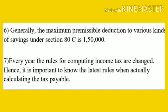Moving to the next point: generally the maximum permissible deduction for various kinds of savings under Section 80C is rupees 1,50,000. It means up to 1,50,000 there is no need to pay any tax on this amount. If your savings are more than that, you have to pay tax on that amount.